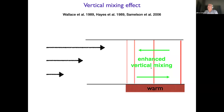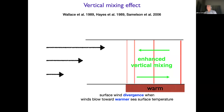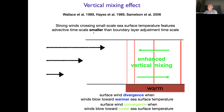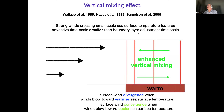This is the vertical mixing effect. We expect this situation when we have strong winds that cross small sea surface temperature features — when the advective timescale of an air parcel passing through the atmospheric boundary layer is smaller than the boundary layer adjustment time. So the air simply does not have time to adjust, and you get this disequilibrium between the air temperature and the sea surface temperature.